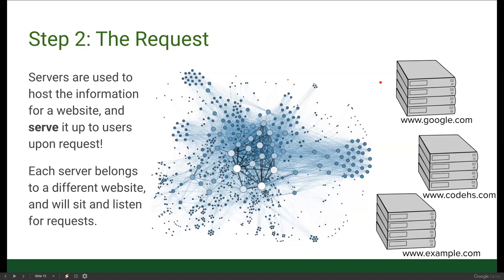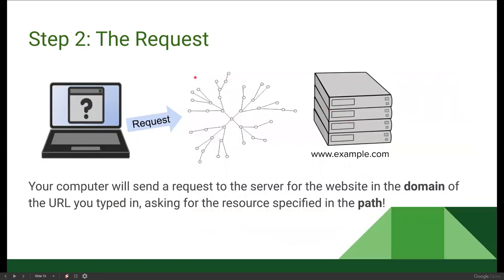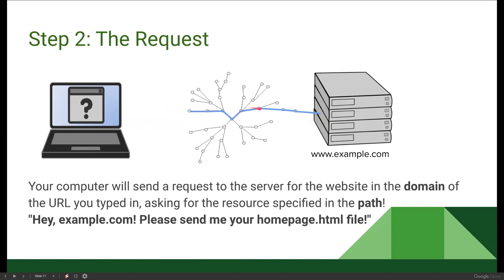A company could have more than one server — Google, for instance, likely has thousands of servers all across the world. So your computer sends a request through the internet to the domain of the URL you typed in, that domain being found on a server. Within that server, we find the path to the resource we're requesting. Essentially, our browser is asking: "example.com, please send me your homepage.html file."